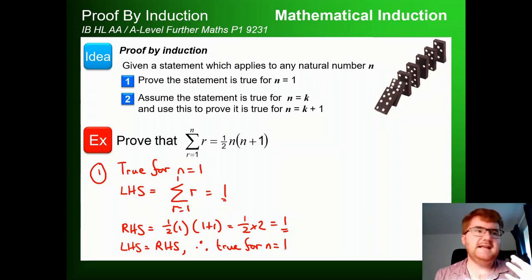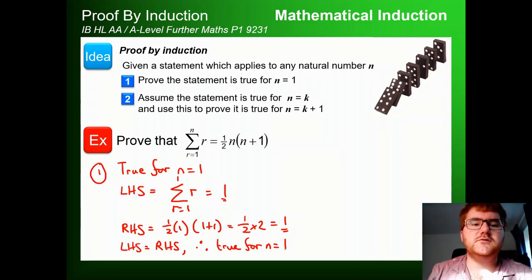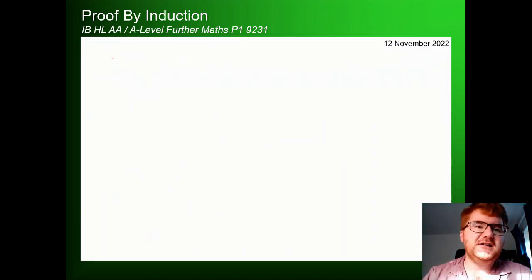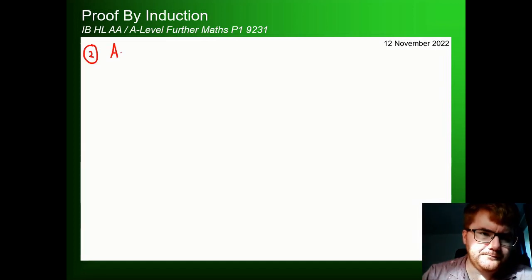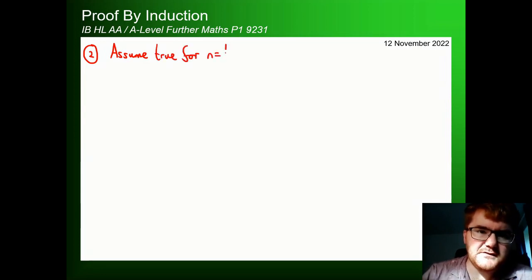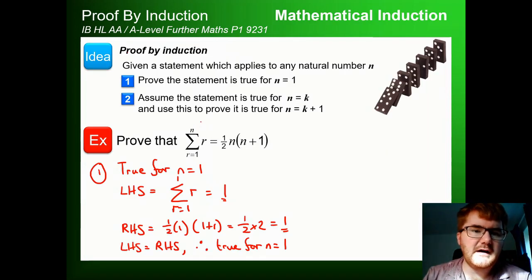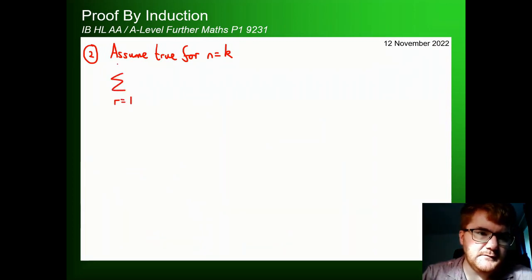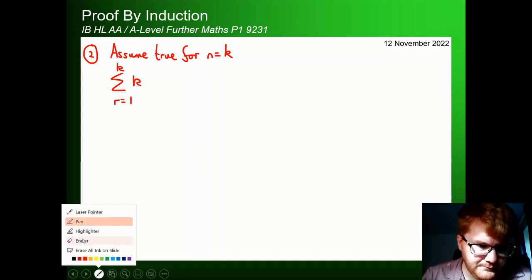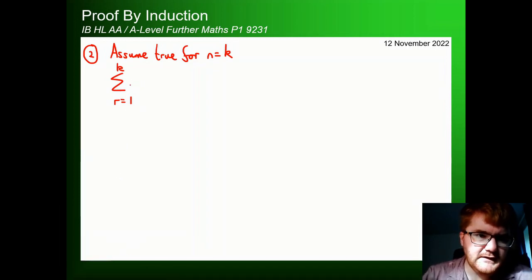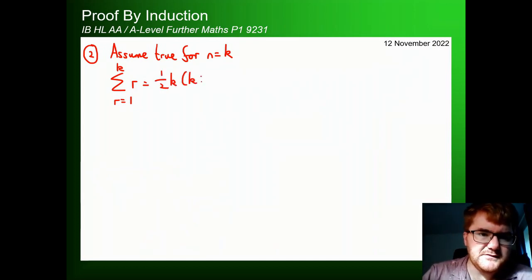Whenever you do a proof by induction, you get marks for establishing the base step. Now, where it gets tricky is the assumption step. We assume it's true for n=k, so wherever we see n, we put k. We get the sum from r=1 to k of r equals ½k(k+1). We're going to assume that's true.